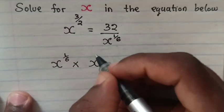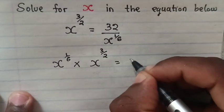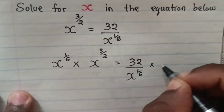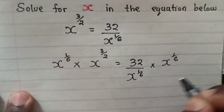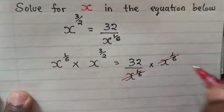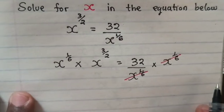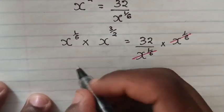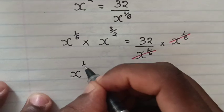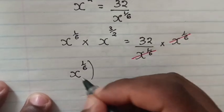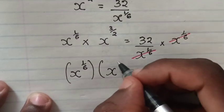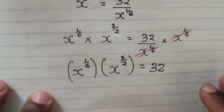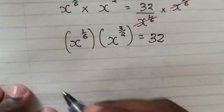So it will be x power of 1 over 6 times x power of 3 over 2, is equals to 32 divided by x power of 1 over 6 times x power of 1 over 6. So x power of 1 over 6 divided by x power of 1 over 6 is 1, leaving x power of 1 over 6 times x power of 3 over 2 is equals to 32.